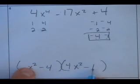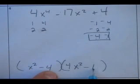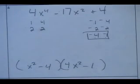Let's double check. I get negative 16X squared, minus 1X squared. Good. First term is 4X to the fourth. Last term is positive 4. Worked out. All right.